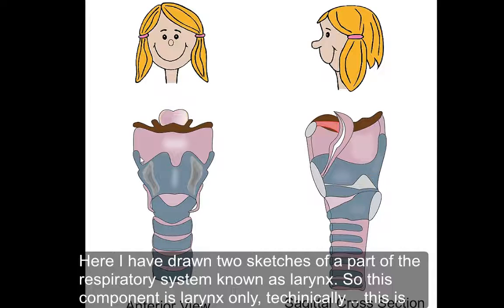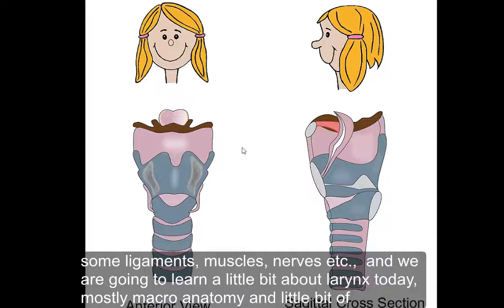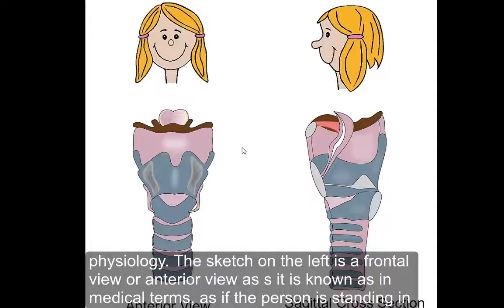Here I have drawn two sketches of a part of the respiratory system known as the larynx. Technically, the hyoid bone is not considered part of the larynx. I intentionally tried to keep it as simple as possible for students by not drawing some ligaments, muscles, nerves, etc. We are going to learn a little bit more about the larynx today — mostly macro anatomy and a little bit of physiology.